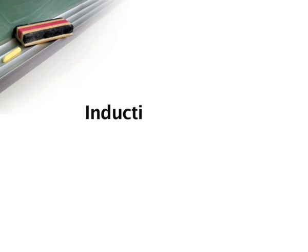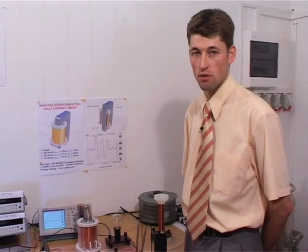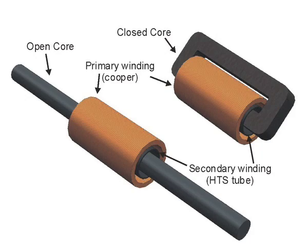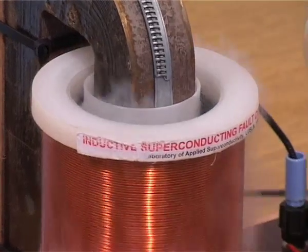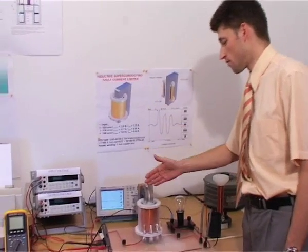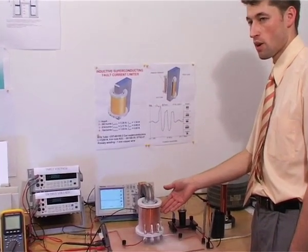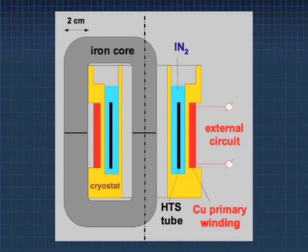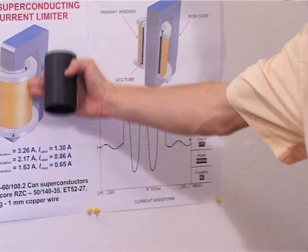Inductive superconducting fault current limiters do not need current leads to the superconducting element, and they are simpler in structure than the resistive ones. There are two types of superconducting fault current limiters: one with a closed core, and another with an open core. The inductive superconducting fault current limiter with a closed core consists of an iron core and a copper primary winding. Inside the limiter is a ceramic superconducting tube which acts as a secondary winding.